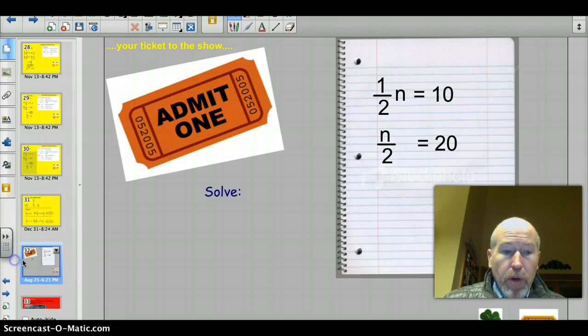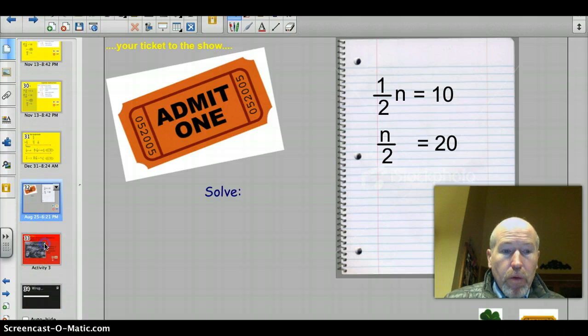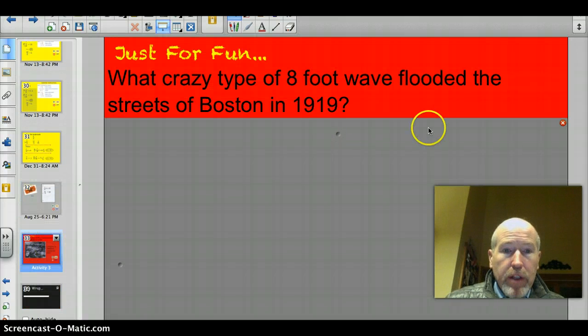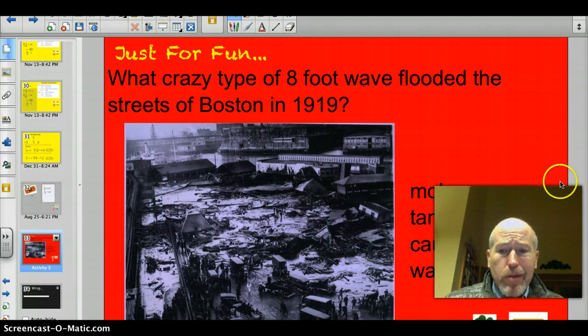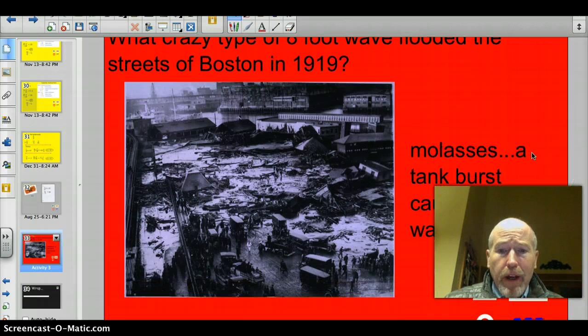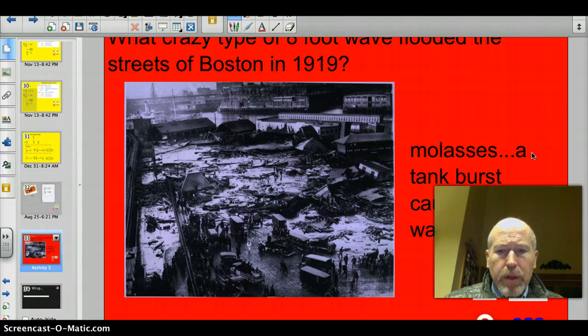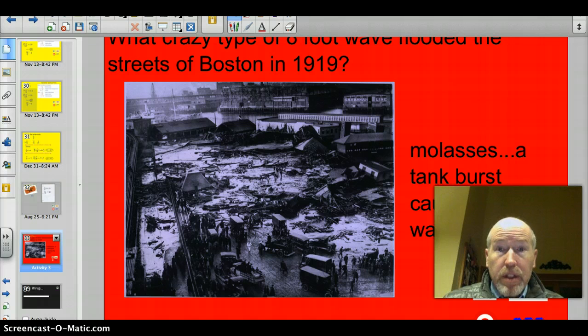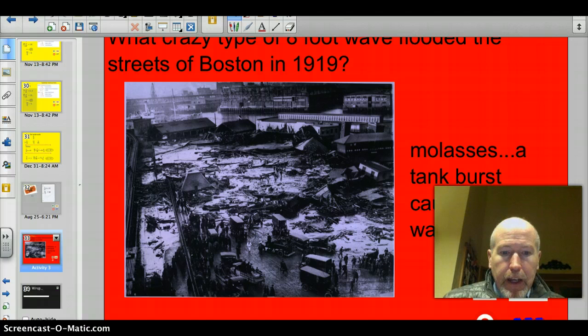And the trivia question. What crazy type of 8-foot wave flooded the streets of Boston in 1919? Believe it or not, it was a molasses wave. Yeah. Weird. I'm sure that wasn't very fast moving. But a molasses tank burst, causing this giant wave to flood it, and this is what the aftermath looked like. Crazy, huh? It was a sticky situation. Ba-dum-ching. Thanks so much for listening. Bye.